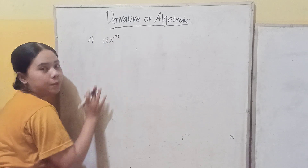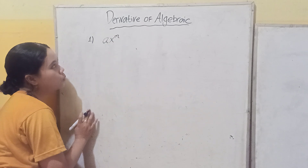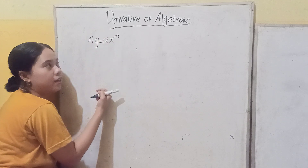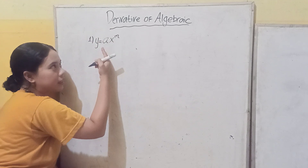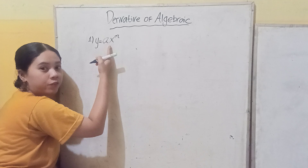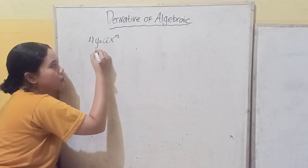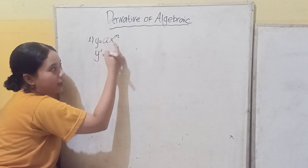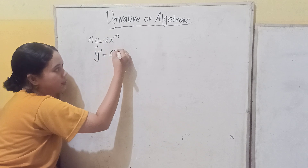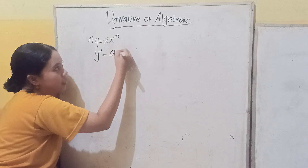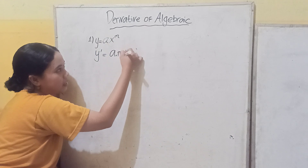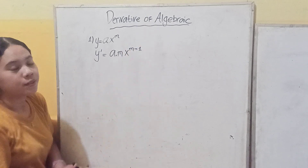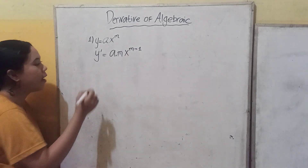So if y equals ax^m, then we want to find the derivative of this function. It means y' equals m times a, so a times m, then x to the power of m minus 1. That's the formula.